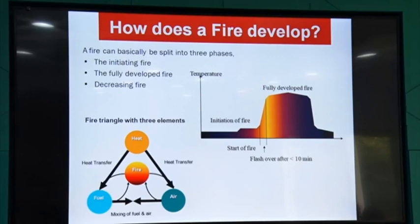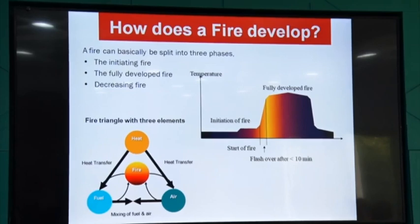Whenever we decide to develop a textile material, chemical finish, or something else to make textile material fire retardant, we need to cut one of these three elements. If we cut air — there is heat and fuel only, but we cut air — there will be no fire. We can also cut heat: if there is no heat, fire will not start. And if there is no fuel, then there is no fire. These are the considerations when developing fire-protective chemicals or finishes.